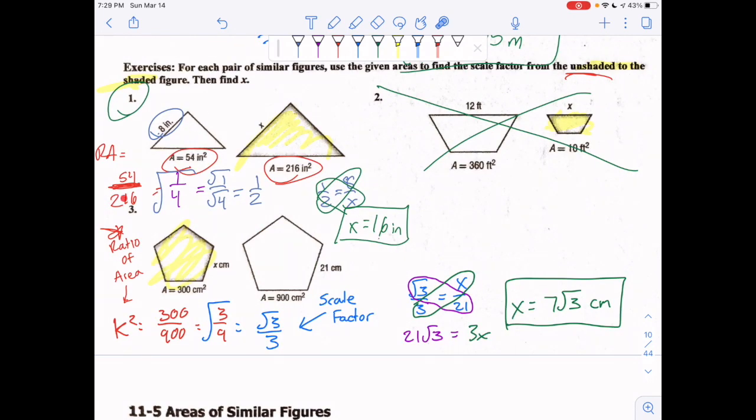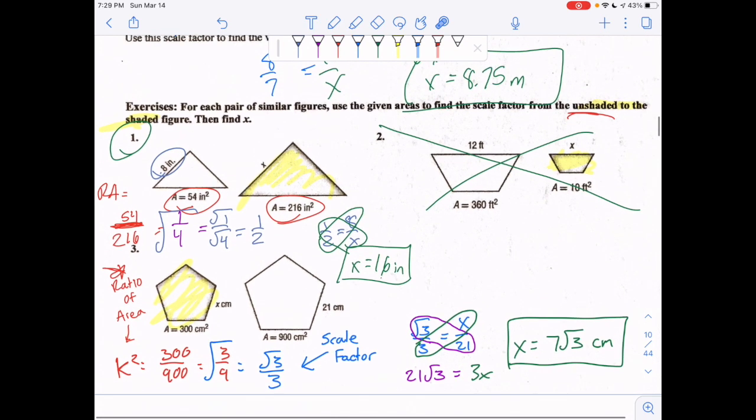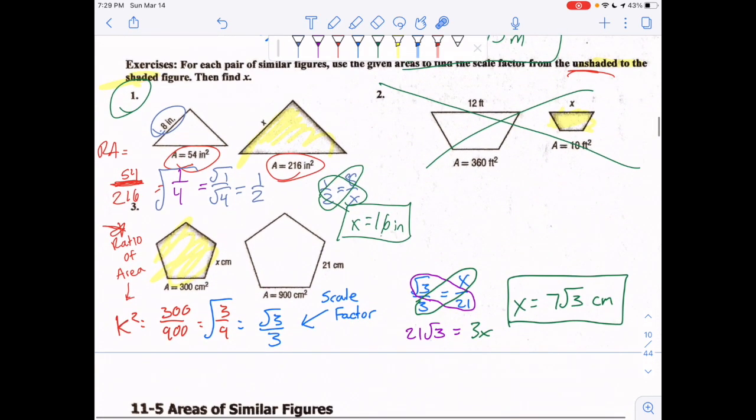Alright guys, let's check the answer for number three. You start off with the ratio of your area (k squared): 300 over 900. Let's find the scale factor: 300 over 900, simplify to 3 over 9.